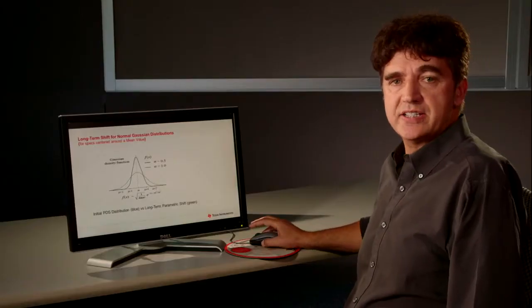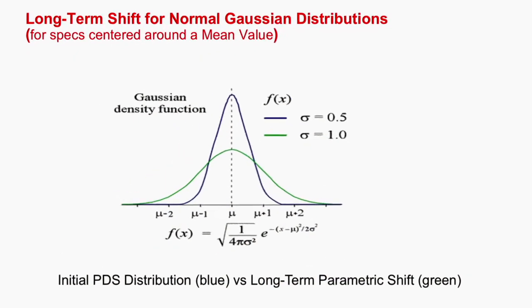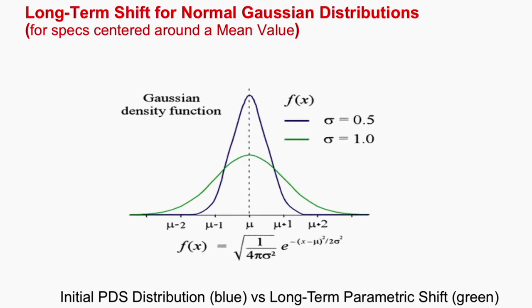The next slide shows how distribution changes over the life of a product. The blue curve shows the initial distribution, the distribution of all the parameters as we test them and ship to the customers. The green curve, the flatten at the top, shows how things change over the life of a product. You might notice that the sigma doubles over the 10-year life of a product.